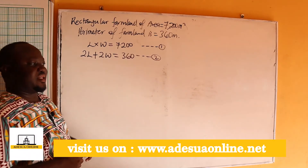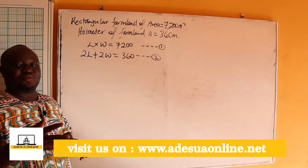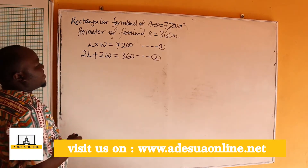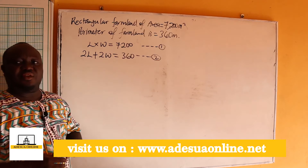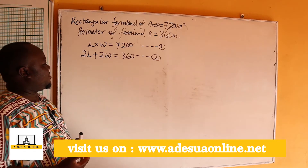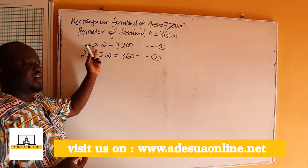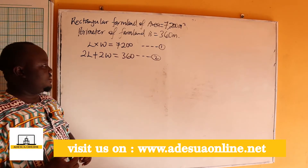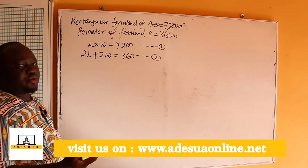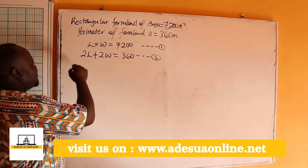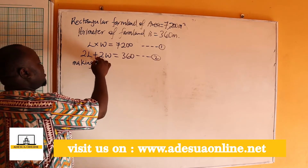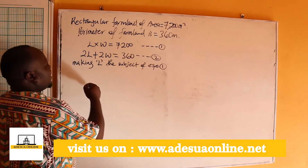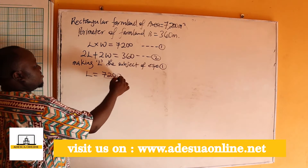The perimeter of a rectangle is 2L plus 2W because we have length, length, width, width. We are going to solve this simultaneously. We can't use the elimination method because the variables are multiplying, not separated by addition. So the best method to use here is the substitution method. We are going to make either W or L the subject of equation 1.